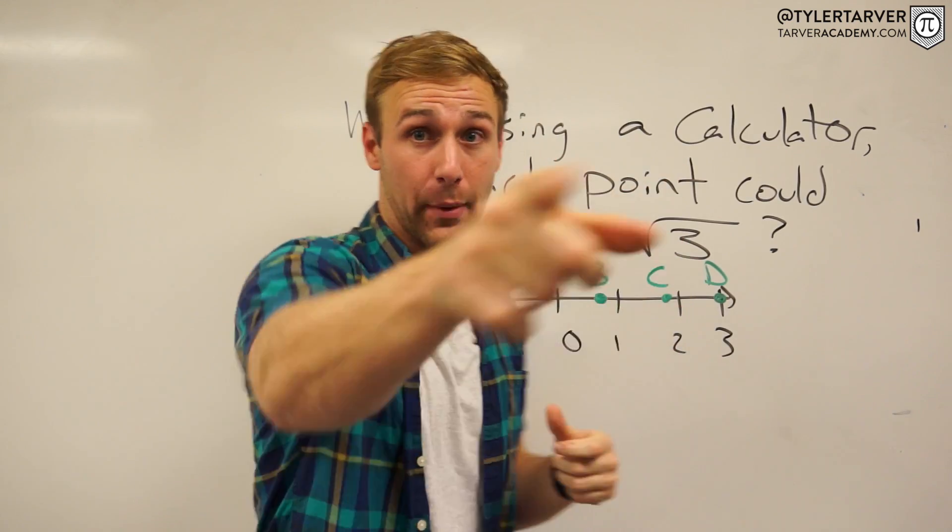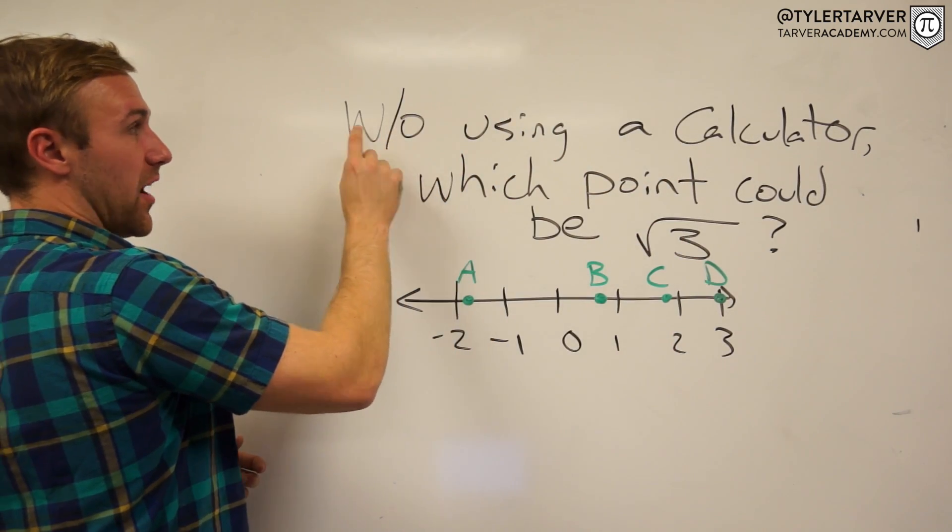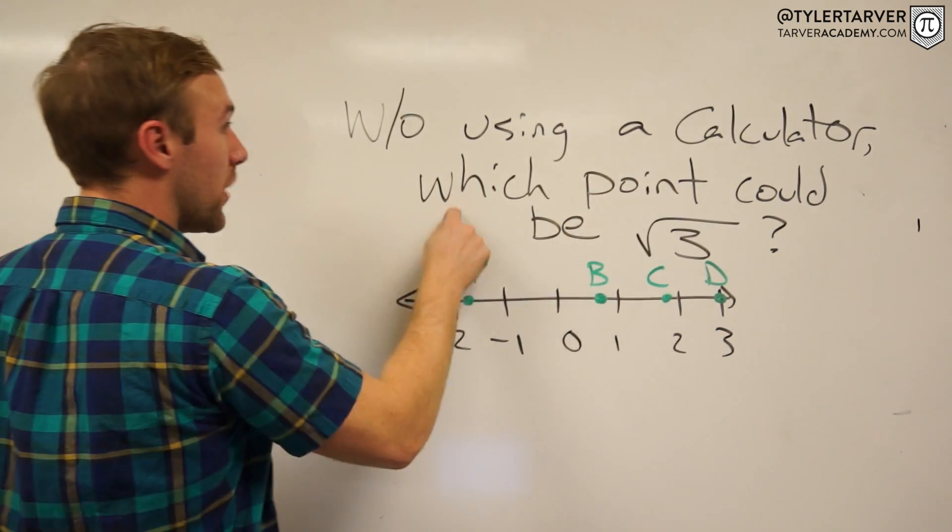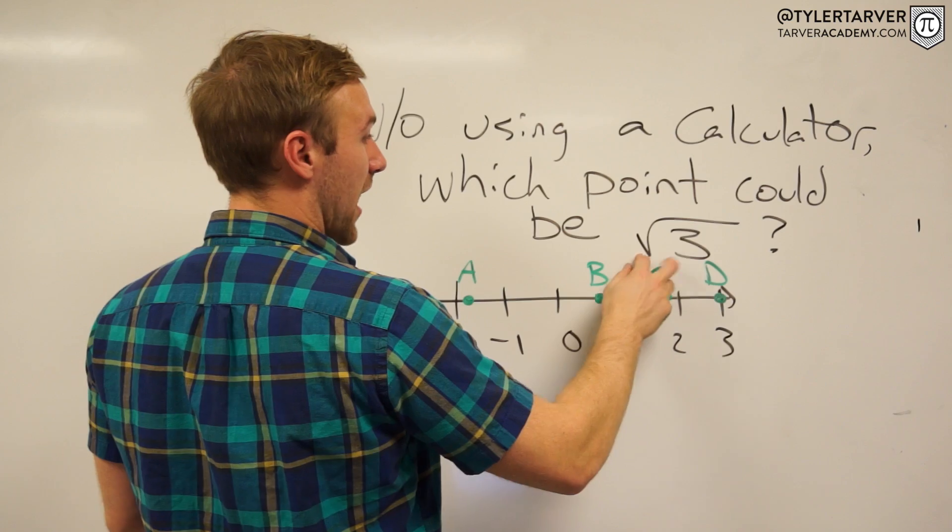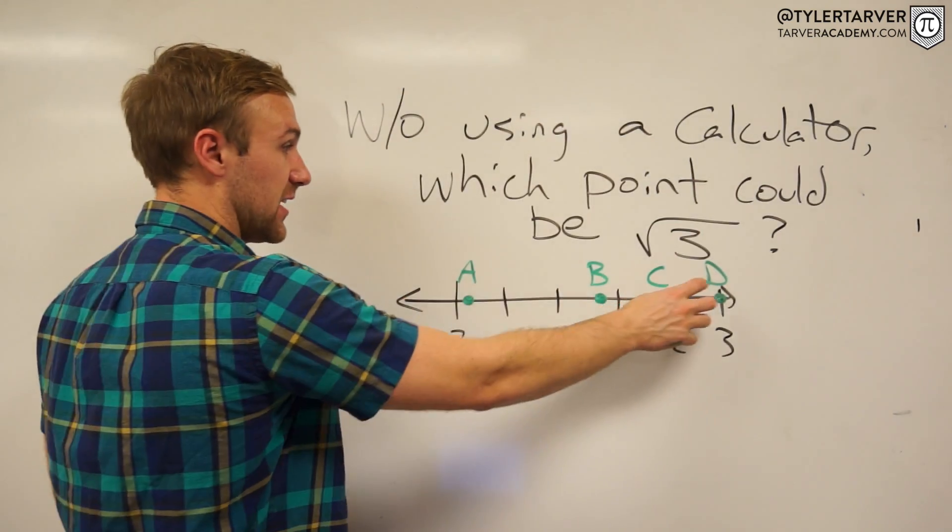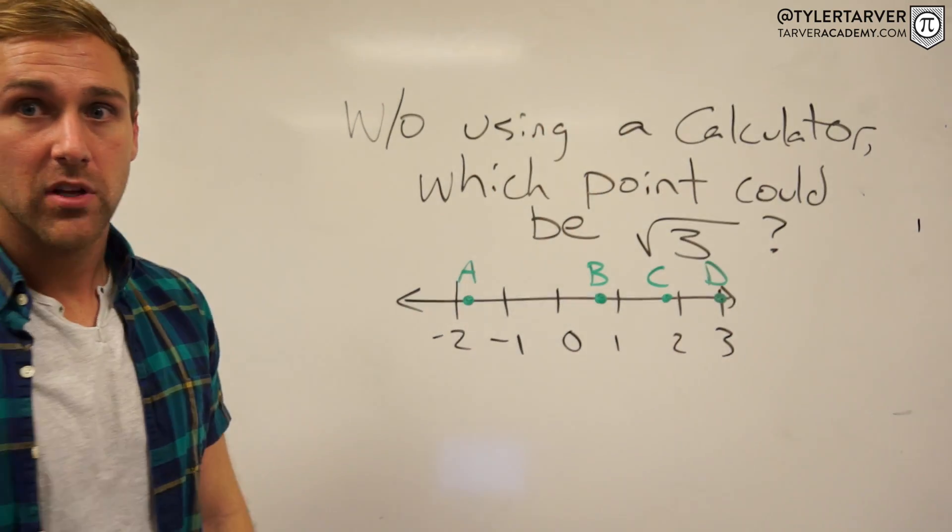And then see if you got it right. Here we go: without using a calculator - no calculator is allowed - which point could be √3 or square root 3, however you want to say it? Here are your options A, B, C, and D. Look at the number line and figure out which one you think it is.